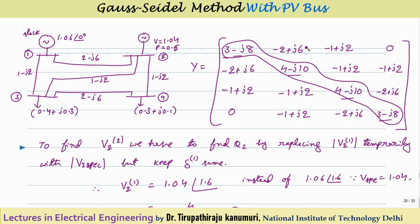For the upper triangular off-diagonal elements: Y12 = −(2 − j6) = −2 + j6 (between buses 1 and 2). Y13 = −(1 − j2) = −1 + j2 (between buses 1 and 3). Y14 = 0 (no direct connection). Y23 = −(1 − j2) = −1 + j2 (between buses 2 and 3). Y24 = −(1 − j2) = −1 + j2 (between buses 2 and 4). Y34 = negative of the admittance between buses 3 and 4. Lower triangular elements are the transpose.